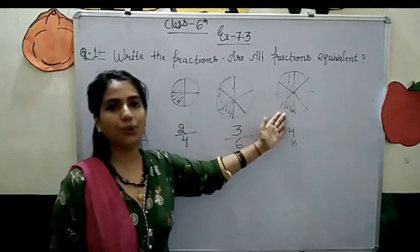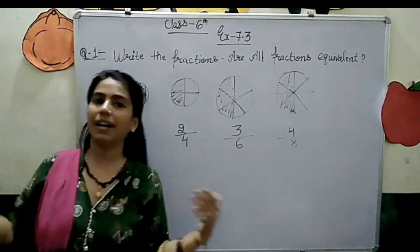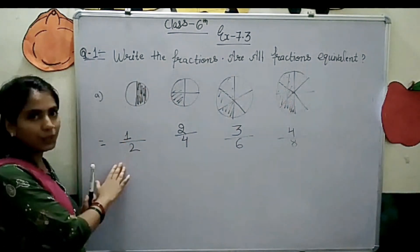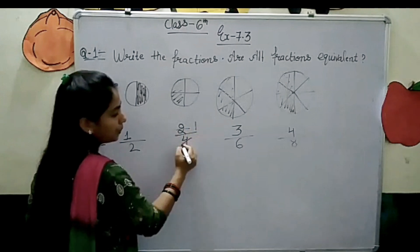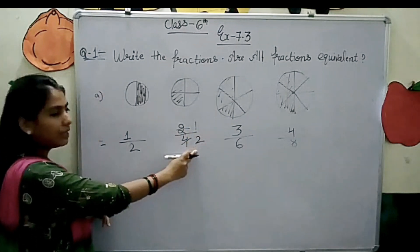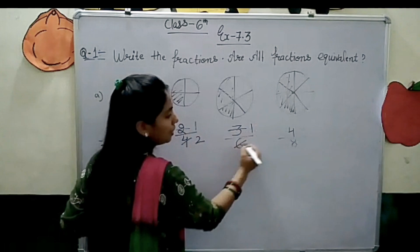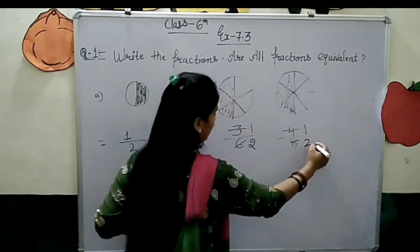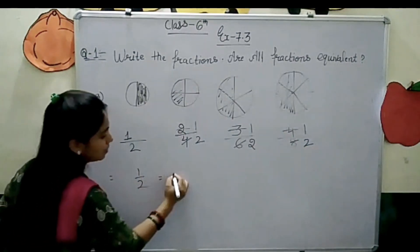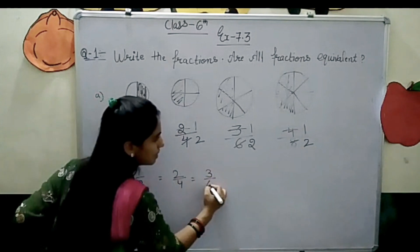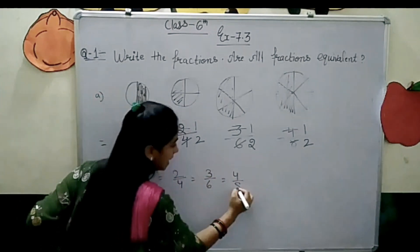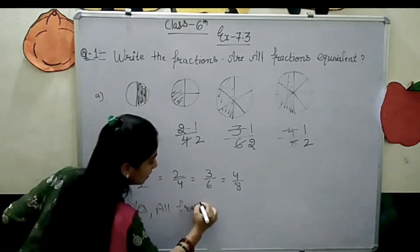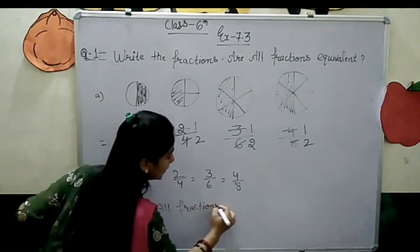From the figure it is understood that all these figures are equally divided. Are all fractions equivalent? Yes. See: 2 by 4 divided by 2 gives 1 by 2; 3 by 6 divided by 3 gives 1 by 2; 4 by 8 divided by 4 gives 1 by 2. So 1 by 2 equals 2 by 4 equals 3 by 6 equals 4 by 8 — all fractions are equivalent.